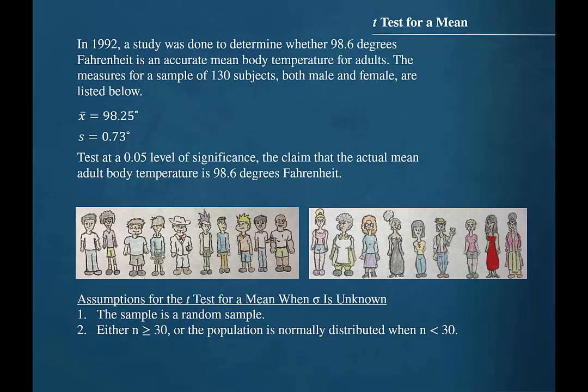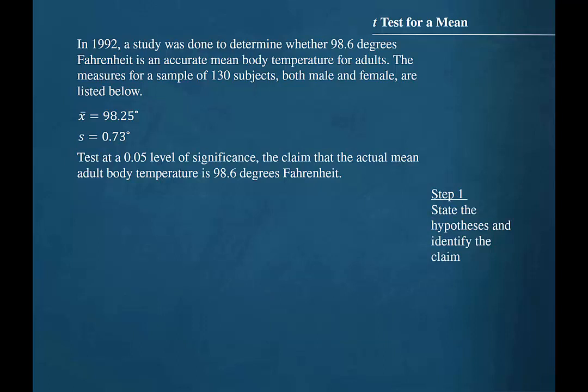Step one is to state the hypotheses and identify the claim. The claim is that the actual mean adult body temperature is 98.6 degrees Fahrenheit, so this will be a two-tailed test. Remember that the null hypothesis always contains the equals sign.